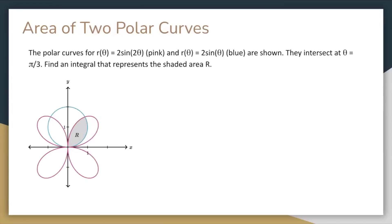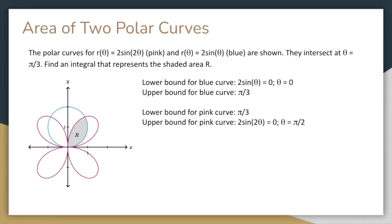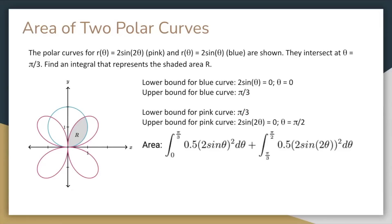For the area bounded by two polar curves, the main part of the problem is also determining the bounds. The polar curves for r of theta equals 2 sine of 2 theta and r of theta equals 2 sine of theta are shown. They intersect at theta equals pi over 3. Find an integral that represents the shaded area. The blue curve bounds the area from theta equals 0, which you can get by solving 2 sine of theta equals 0, to theta equals pi over 3, where the curves intersect. And the pink curve bounds the area from pi over 3 to pi over 2, which is determined by solving 2 sine of 2 theta equals 0. The final step is to add the areas bounded by each of these two curves.